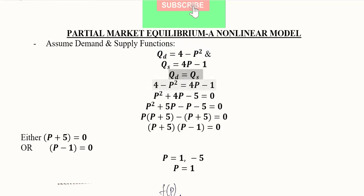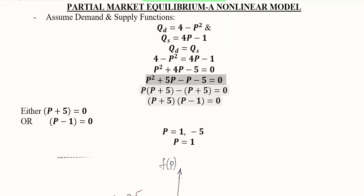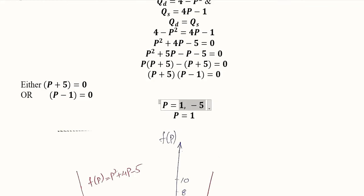Qd is equal to Qs. Substituting the values Qd and Qs, we will get this equation which has a quadratic specification. We can solve this, and it's a simple method of factorization by using which we are able to find the two values of prices, and these are P = 1 and minus 5.